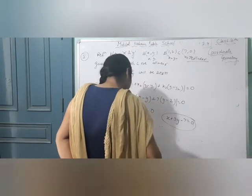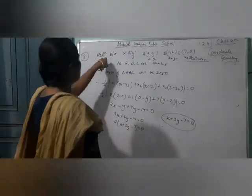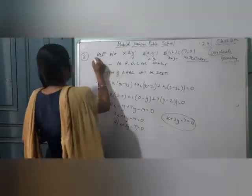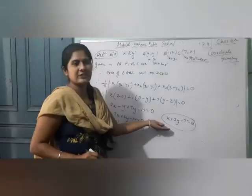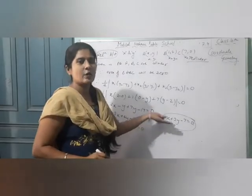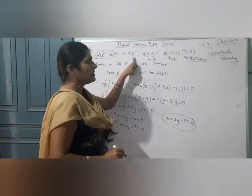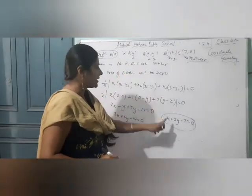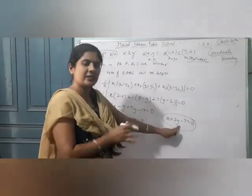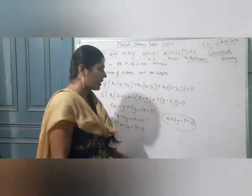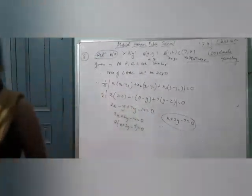So x + 3y - 7 = 0 is the answer. The relation between x and y means some equation involving x and y will come — that is your answer.